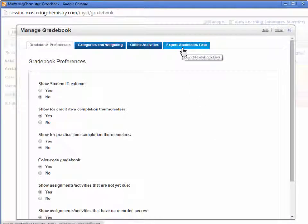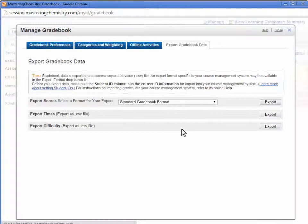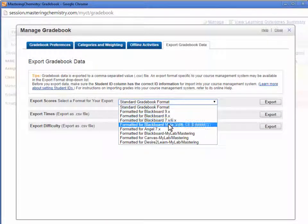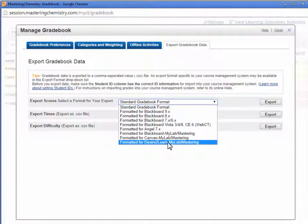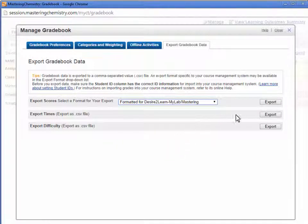Click export gradebook data. Under export scores, select formatted for Desire to Learn MyLab Mastering. Click export.